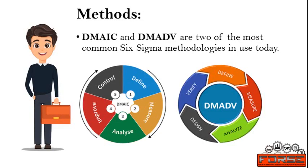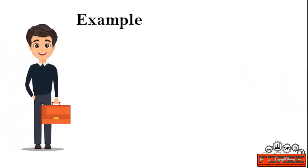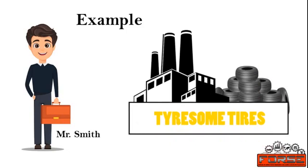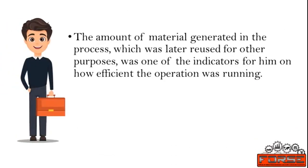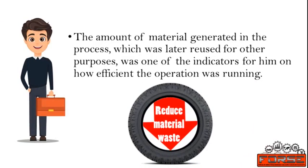In this video we will look into the DMAIC methodology of Six Sigma, and to understand it better we will consider an example. We have Mr. Smith, who had been assigned to implement Six Sigma in Tiresome Tires, a tire manufacturing company. He focused on improvements in the rubber extrusion process, particularly the mixing, preparation, and construction departments. The mixing department received raw materials that were transformed into compound sheets used in the preparation department on seven extrusion lines, focusing on tread and sidewall extrusion. The ultimate customer for the extrusion process was the construction department. The focus was to limit the amount of extra material generated during the tread and sidewall extrusion process, called work-off.